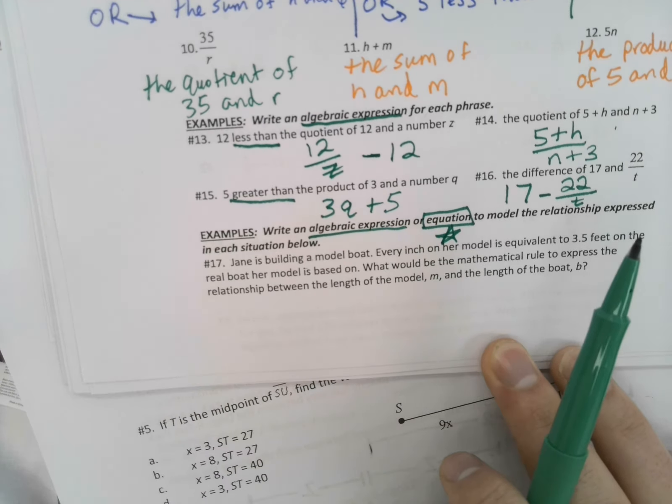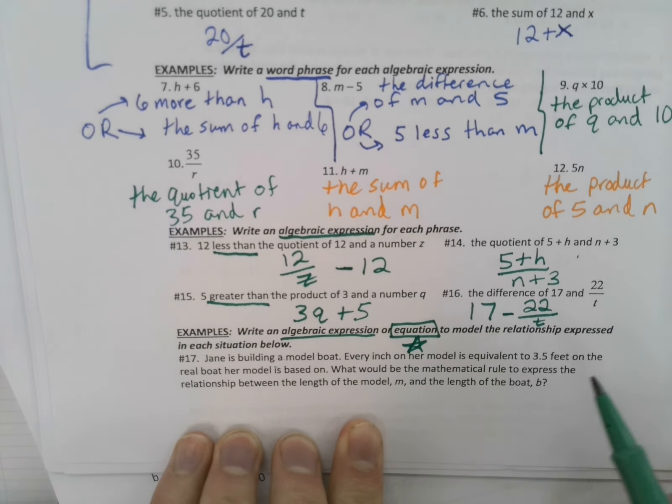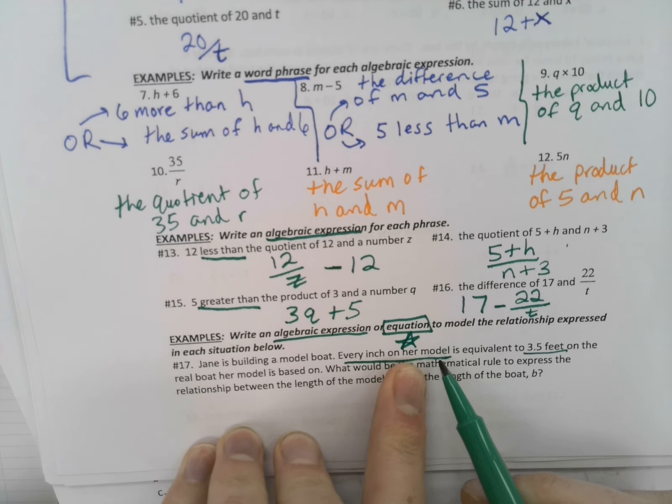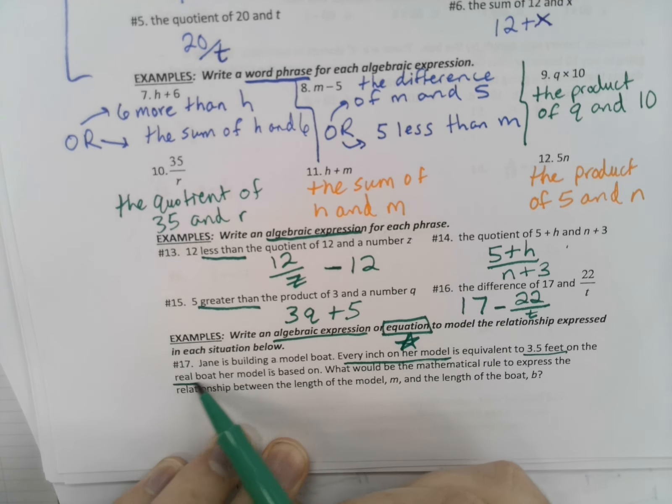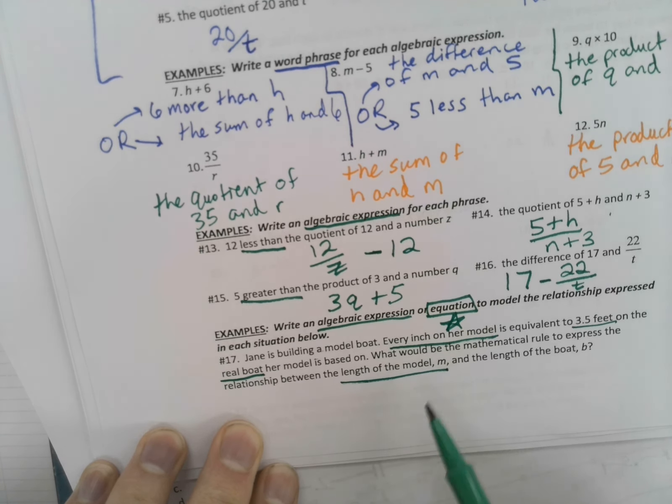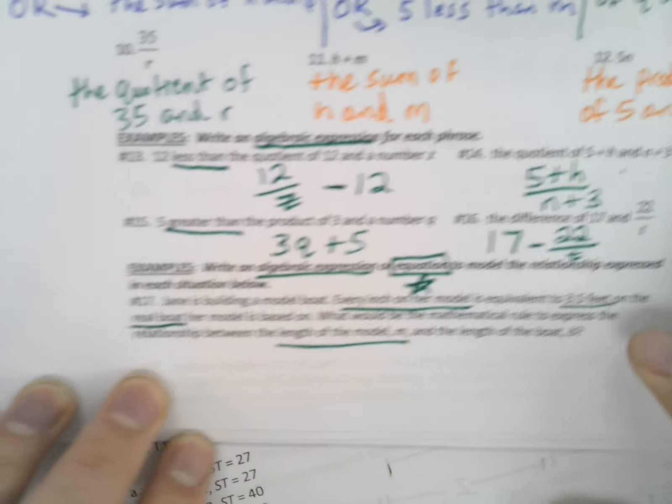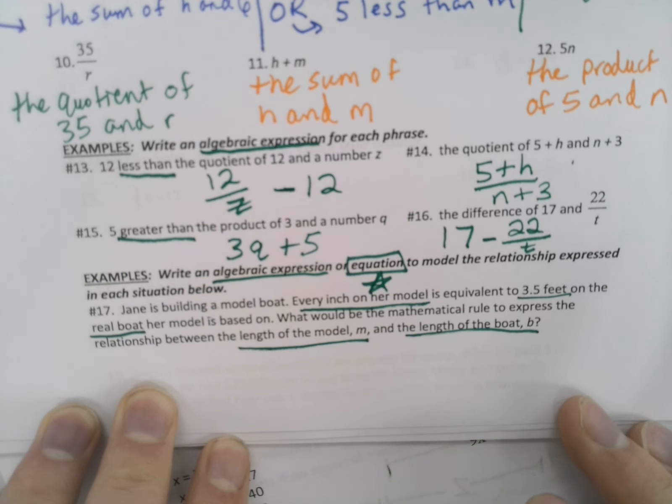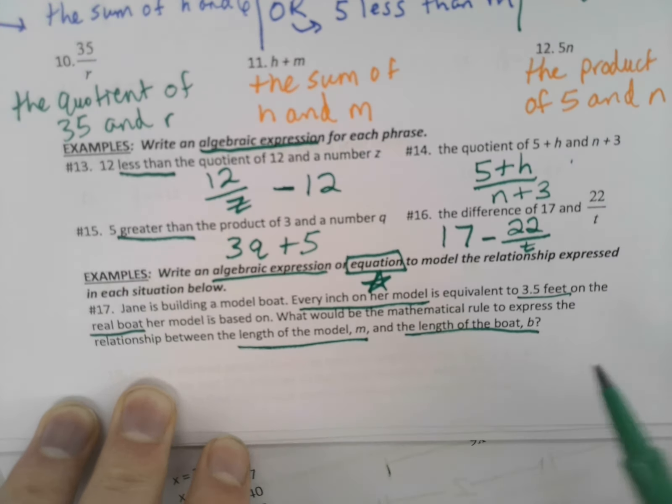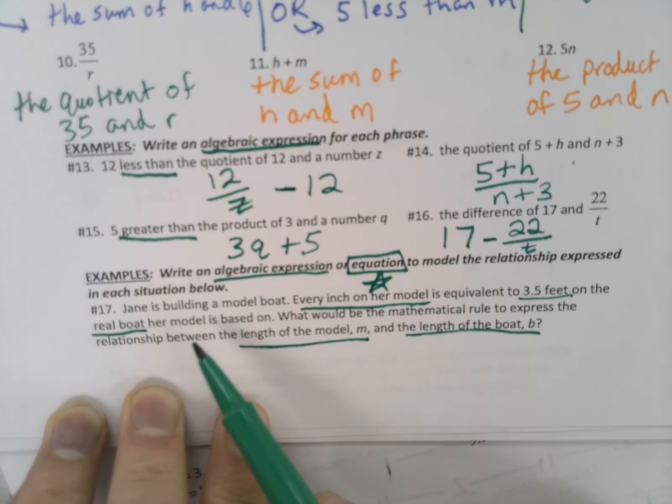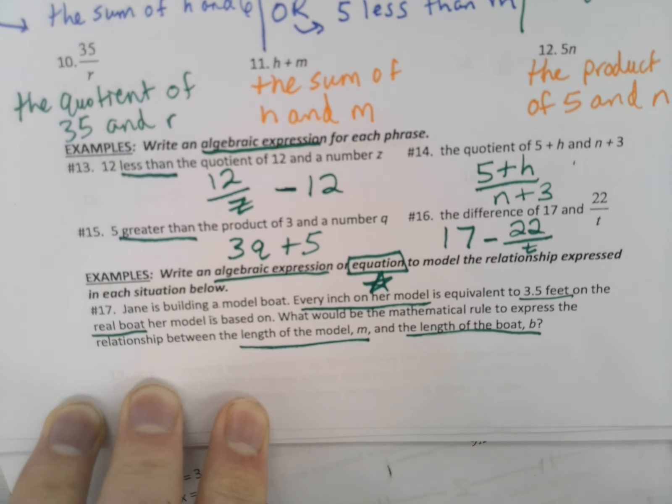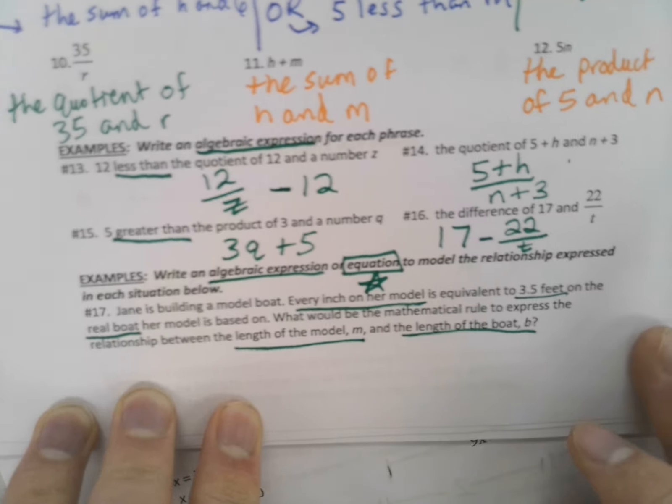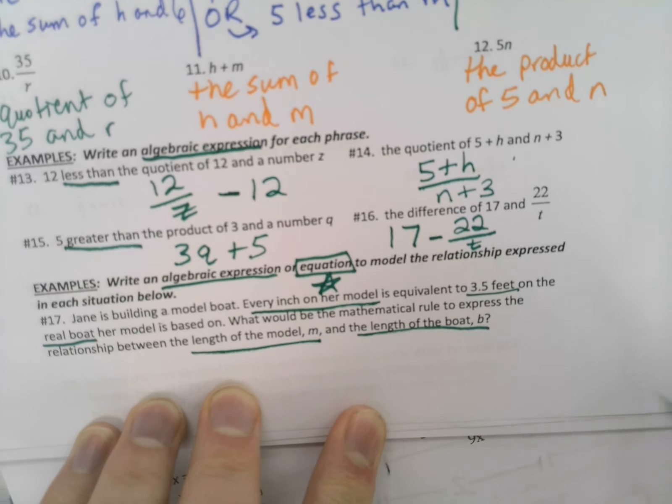So we're going to be coming up with something that actually has an equal sign. And we're going to be modeling the relationship that this model has with the original. So be underlining, be thinking, maybe taking some notes as to how we're going to attack a word problem. So you can pause now. So the three things that jump out to me, guys, are that we're told every inch on her model is equivalent to 3.5 feet. So we're given that every inch on the model. But the problem is we have inches on the model and feet on the real boat. So we're going to have to do something about that. We're also told that the length of the model is called M. And the length of the boat is B.